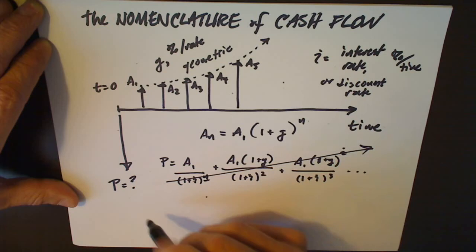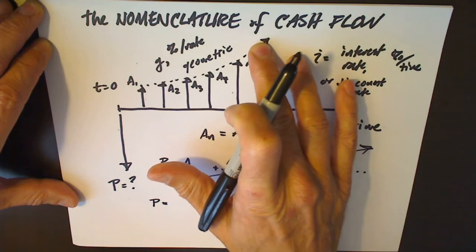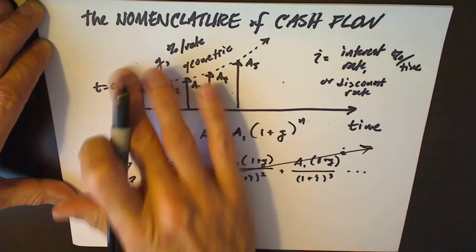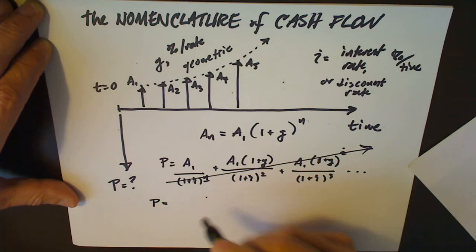As you might have guessed, there is another equation. It's a complicated equation, but it reduces this geometrically increasing cash flow diagram down to a single present worth, and it looks like this.